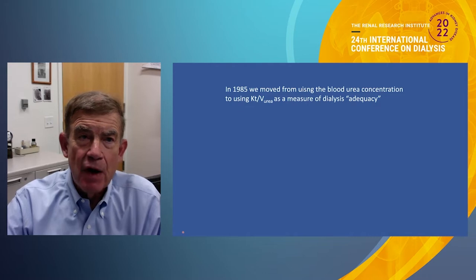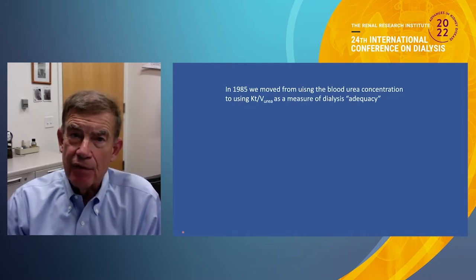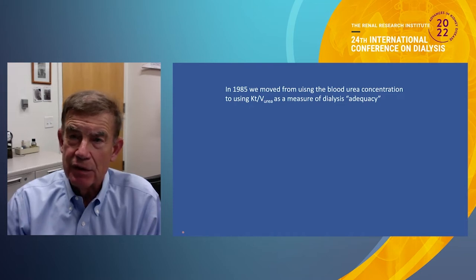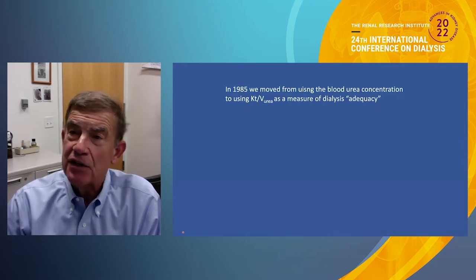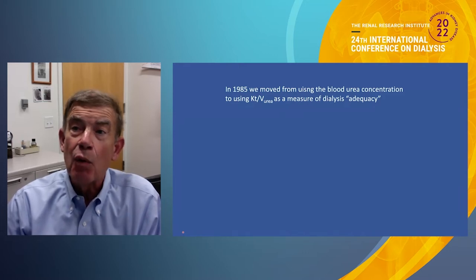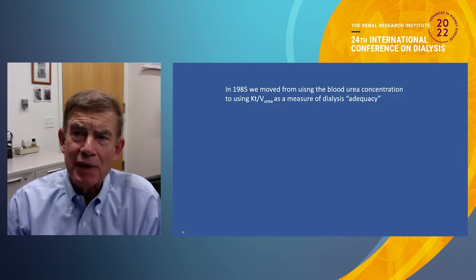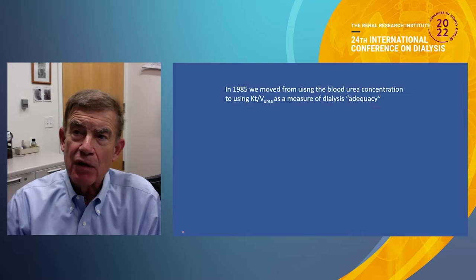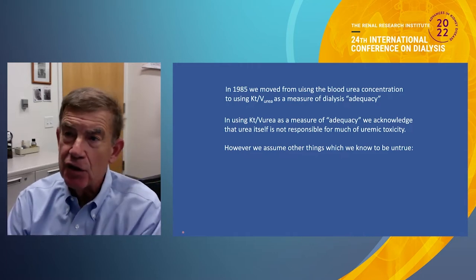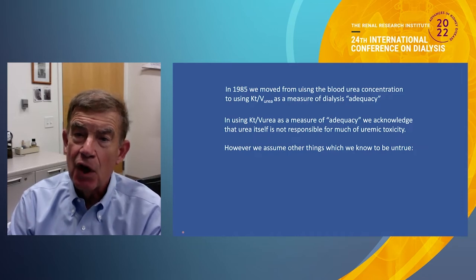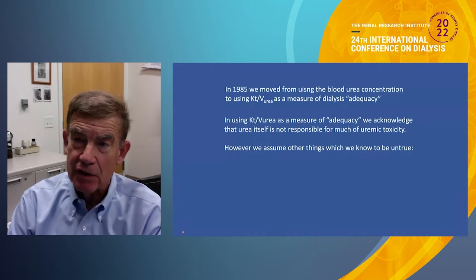Why is that a problem? We did go on in 1985 from using the blood urea concentration, the BUN, to using KT/V urea as a measure of dialysis adequacy. If a patient comes in with a BUN of 100, we lower it by about 70% on each of three weekly dialysis treatments. But if the next patient comes in with a 50, we don't say they're better off — we lower the 50 to 15. So we're not using urea concentration as a marker of toxicity, but as a marker for the other solutes which we presume cause illness.